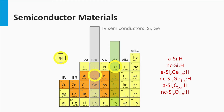All these alloys can be doped. Even the nanocrystalline silicon oxide can be doped p-type by adding boron, or n-type by adding phosphorous.